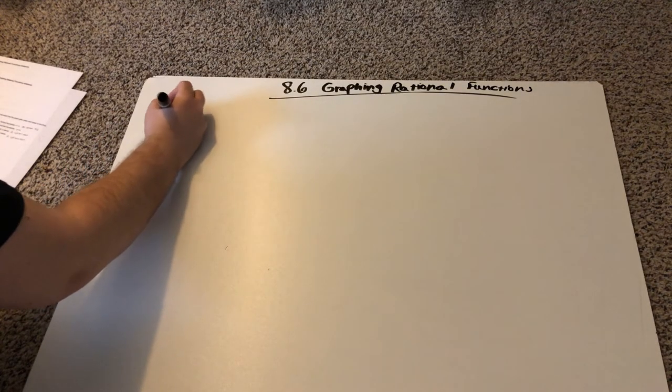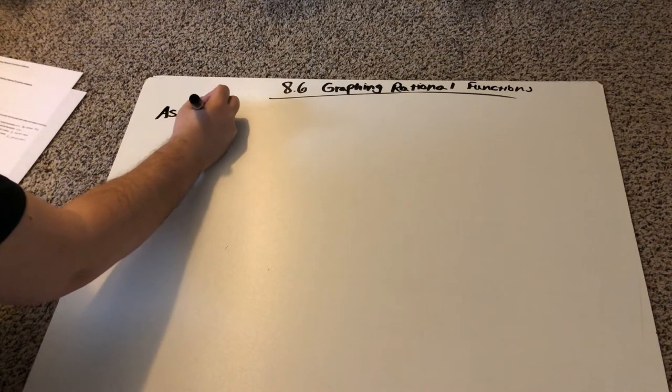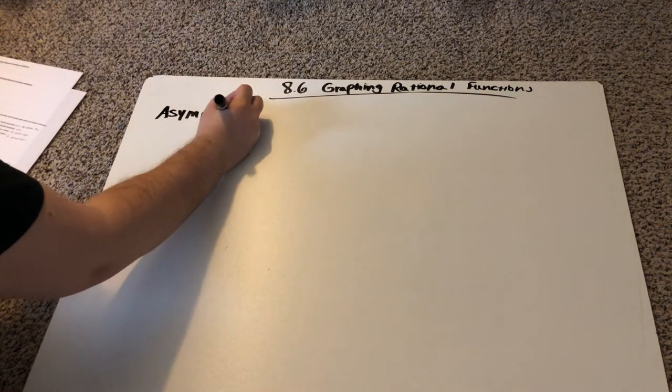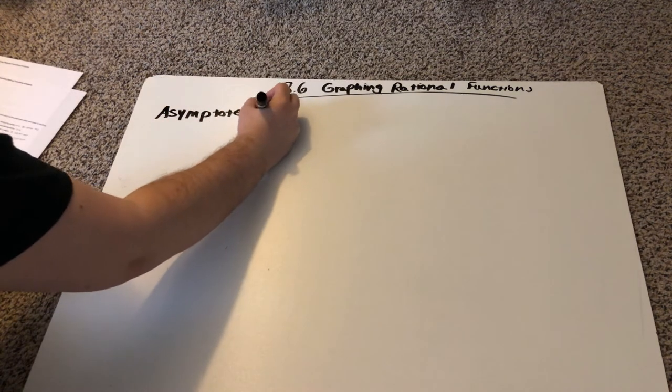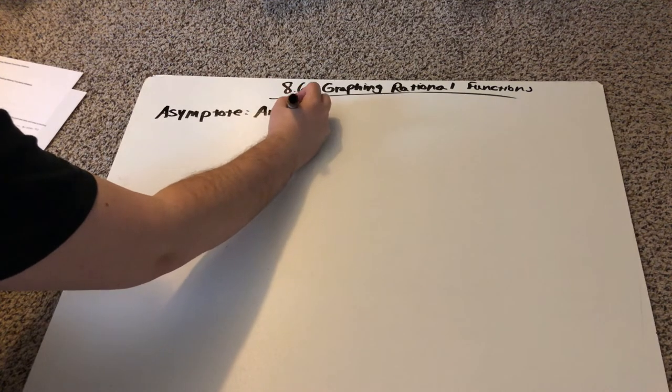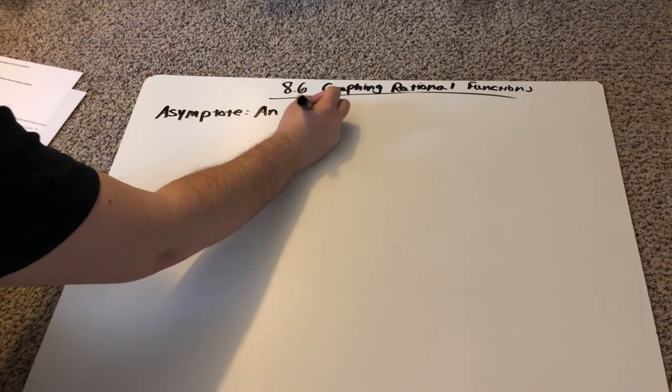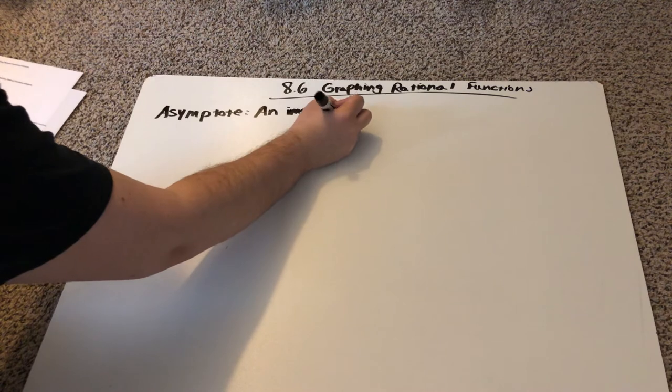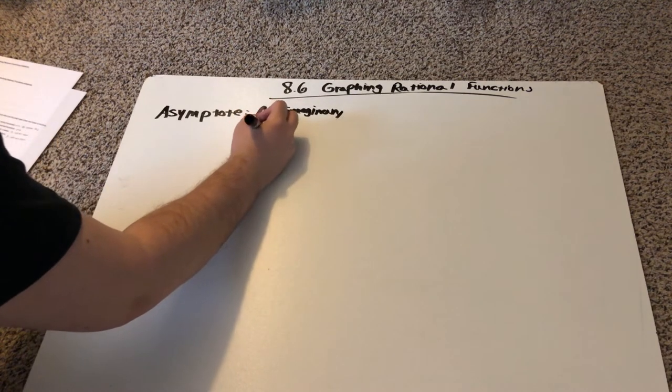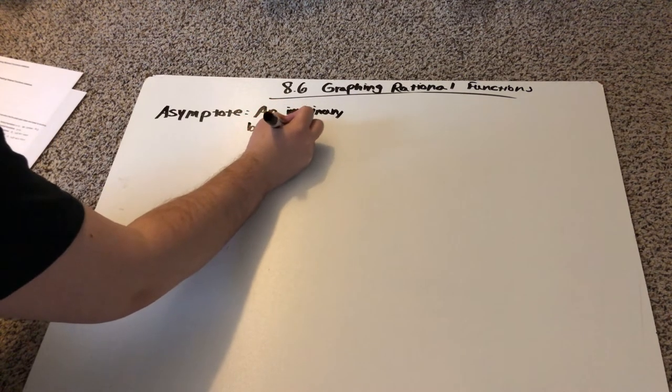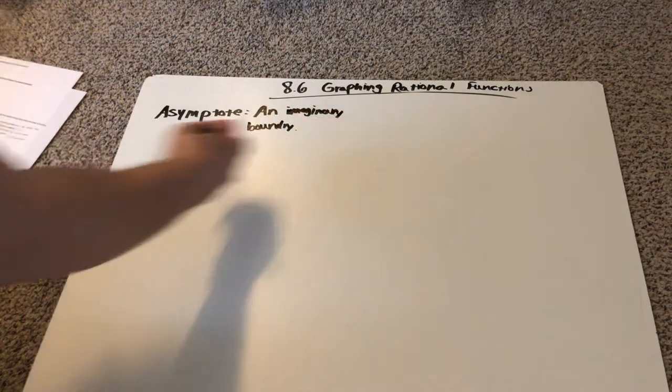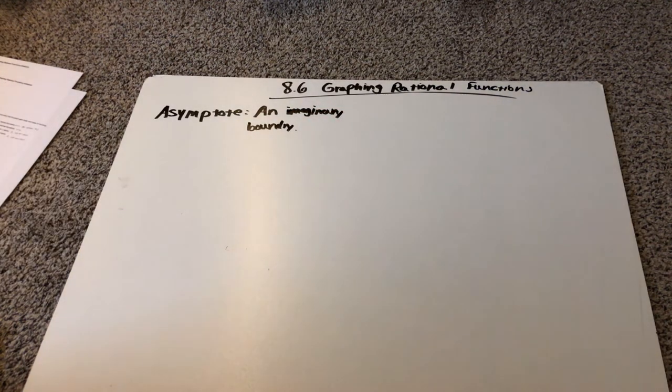And first what we're going to talk about are asymptotes. It's kind of a weird word, but it's just an imaginary boundary that the graph gets closer and closer to when we're graphing it.